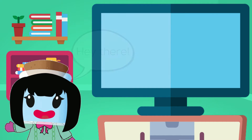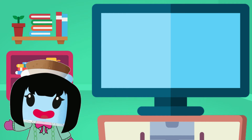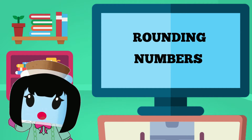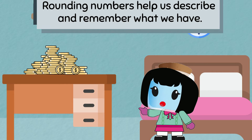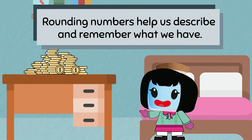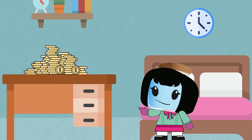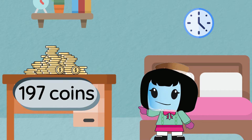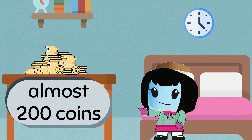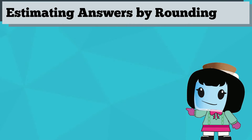Hey there! Today we're going to talk about how to round numbers. When we round numbers, it makes it easier to describe and remember what you have. For example, instead of trying to remember that you have 197 coins in your collection, it's easier to say that you have almost 200 coins.